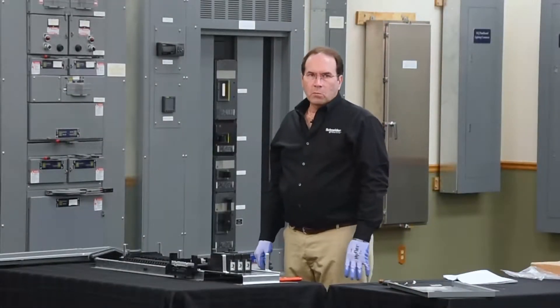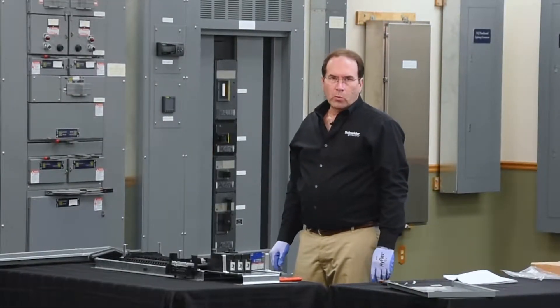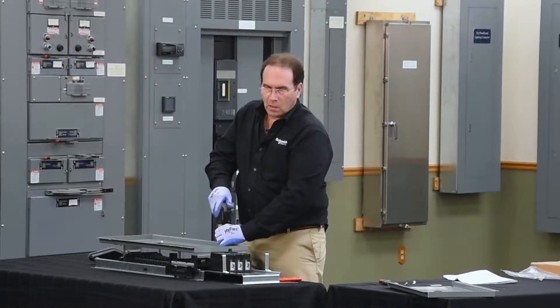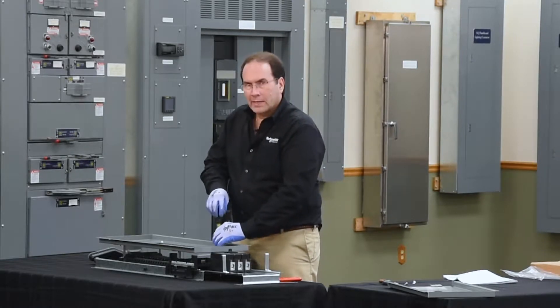Next, we'll modify the dead front assembly to install the main breaker cover. We'll be removing the lug cover on the line end of the dead front.